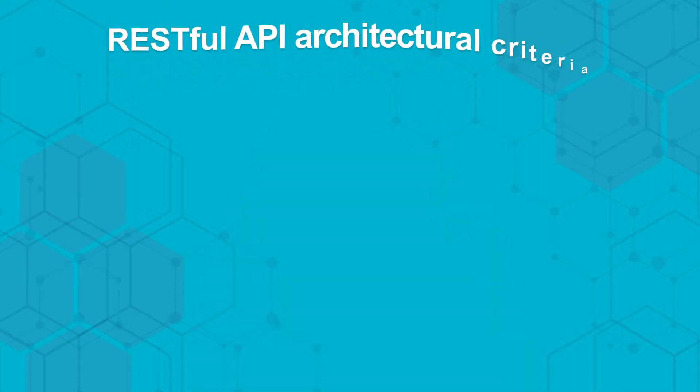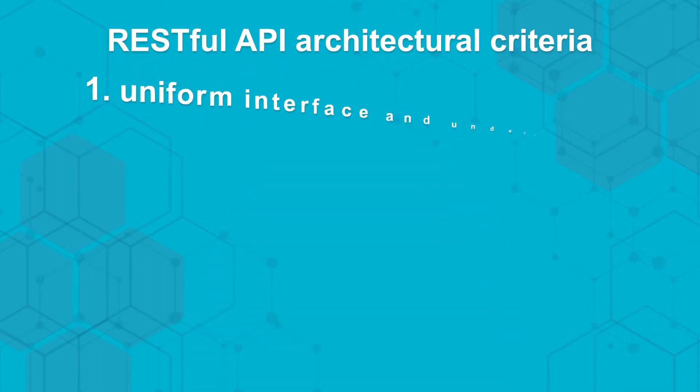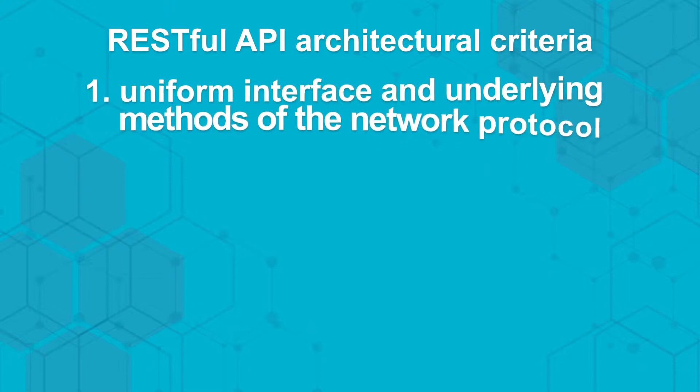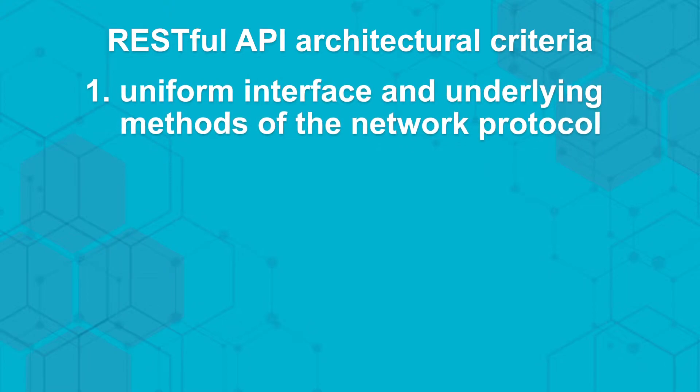While many developers describe their APIs as RESTful, true RESTful APIs must fulfill six architectural criteria. First, use of a uniform interface and underlying methods of the network protocol, like standard HTTP requests: get, put, post, patch, and delete.